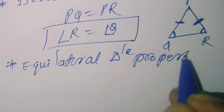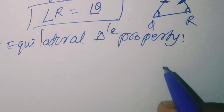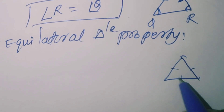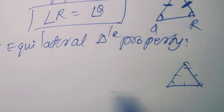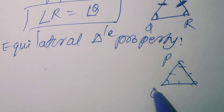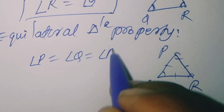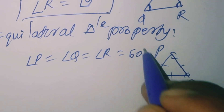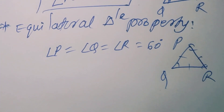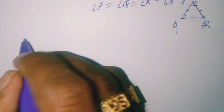The equilateral triangle property: all sides of the triangle are equal, which means all angles are also equal, and each angle is 60 degrees. So angle P equals angle Q equals angle R equals 60 degrees. Based on these properties, we will now solve some problems.